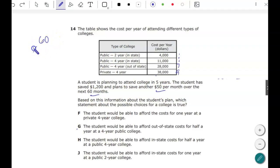So let's see how much that is by doing 60 times 50. You can use your calculator. So he's going to be able to save another $3,000. The student already has $1,200, so that's going to give the student $4,200. So based on this information about the student's plan, which statement about the possible choices for college is true?